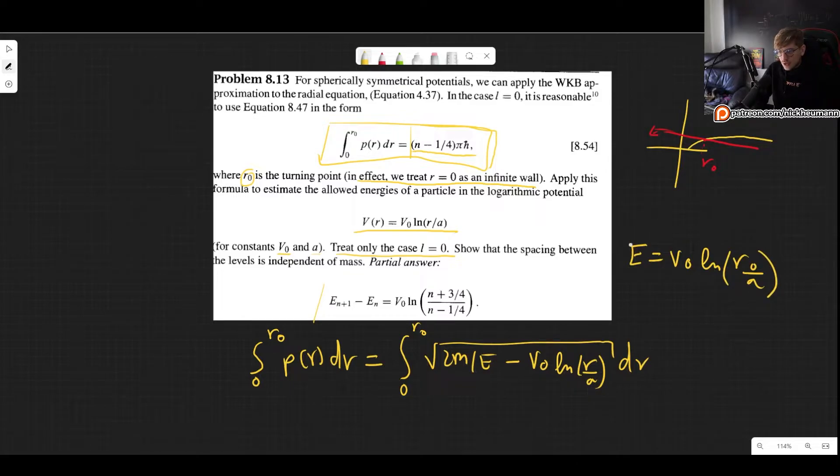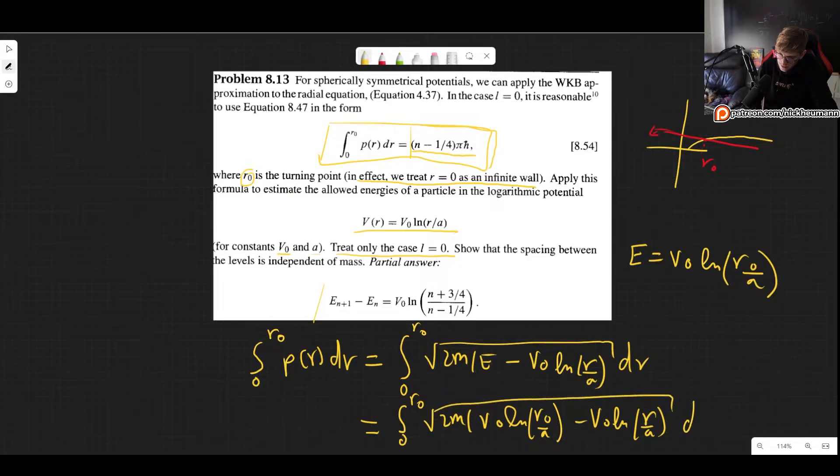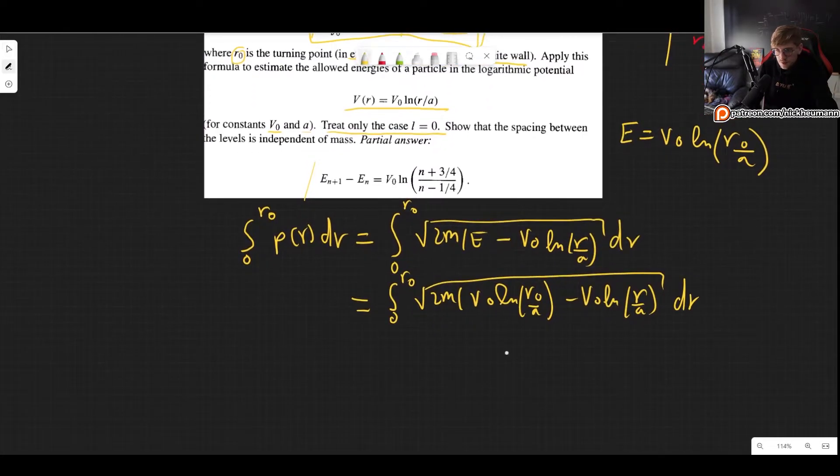For that reason we simply take our potential, plug in R0, and this defines our turning point. It also allows us to know what the energy is. So now we can just plug in the energy in our integral. We integrate from 0 to R0. We have square root of 2m V0 times the natural log of R0 over A minus V0 natural log of R over A.